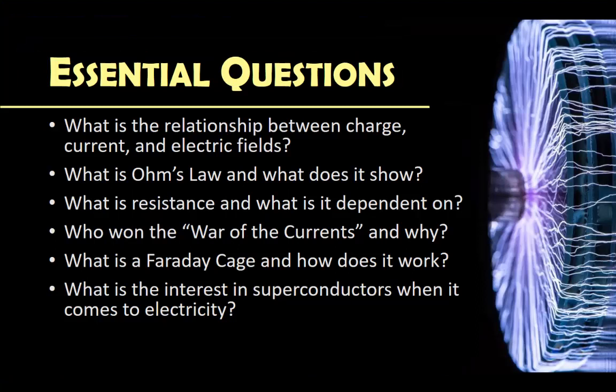Number one: what is the relationship between charge, current, and electric fields? Last class we went over electric fields, we've been talking about charges, and we introduced you to current on our very first day of the unit. So let's try and relate all those together in terms of a moving charge and what that looks like in terms of how a circuit operates. Number two: what is Ohm's law and what does it show? Make sure we understand Ohm's law, what relationship it gives you, and how we can use it to calculate.